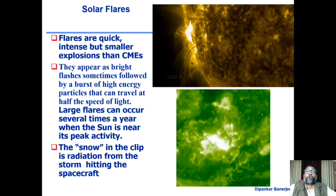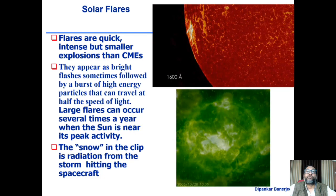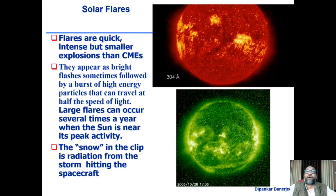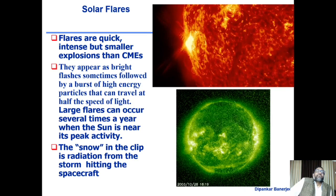One fascinating subject is why the sun changes over a cycle of 11 years. Sometimes the sun shows up with lots of sunspots; sometimes there are none at all. When there are more sunspots it's called solar maxima, and when there are fewer it's called solar minima. Incidentally, we are currently going through the phase of solar minima.